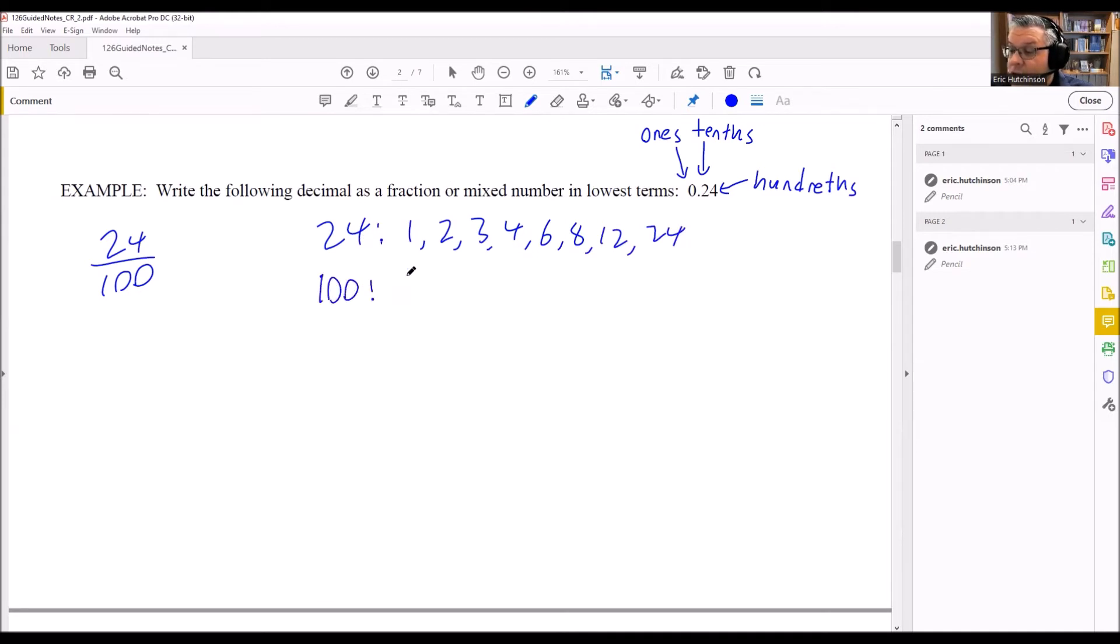Then we have 100, and we want to look at the factors of that. 1 in there, we have 2, 3 doesn't go in there, we have 4, 5 goes in there for sure, 6 doesn't, 7 no, 8 no, we have 9, 10 goes in there evenly.